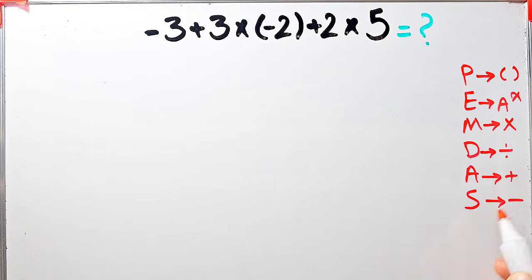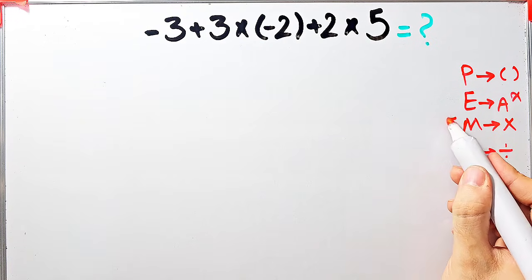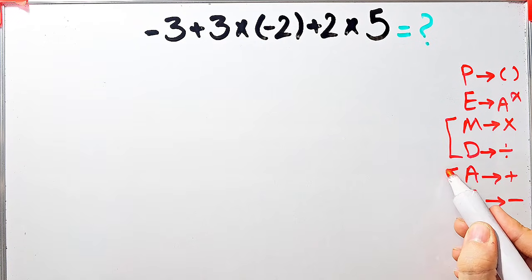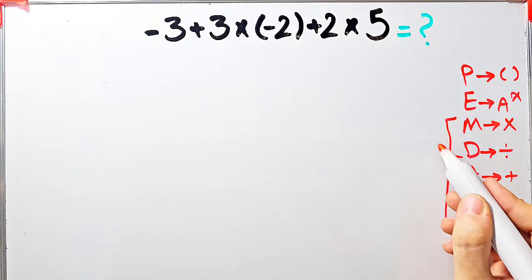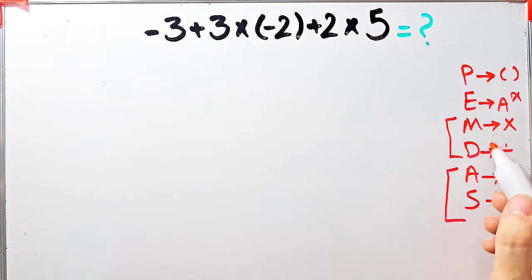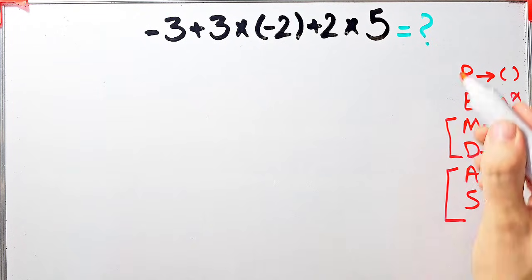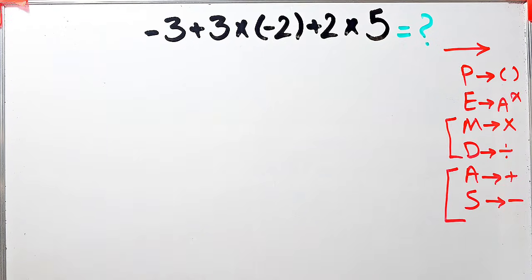D stands for division, A stands for addition, and S stands for subtraction. Multiplication and division have the same level of priority; addition and subtraction also share the same level. When we have both in an expression, we start from the left and simplify.